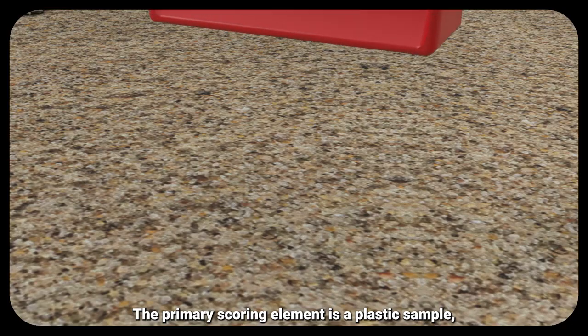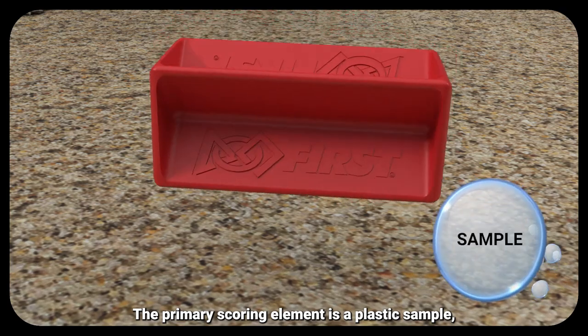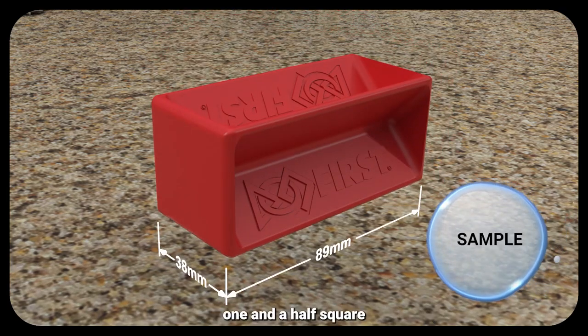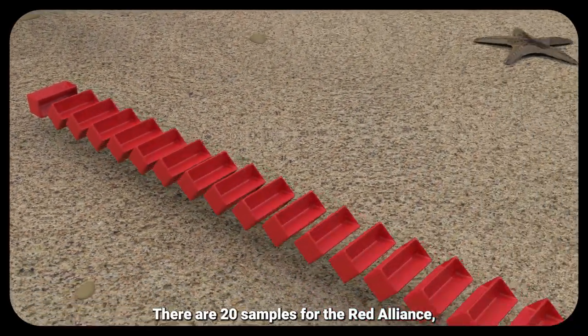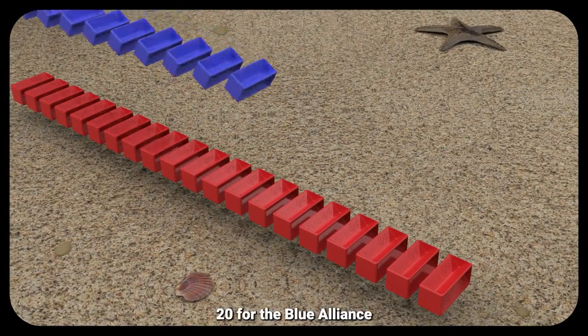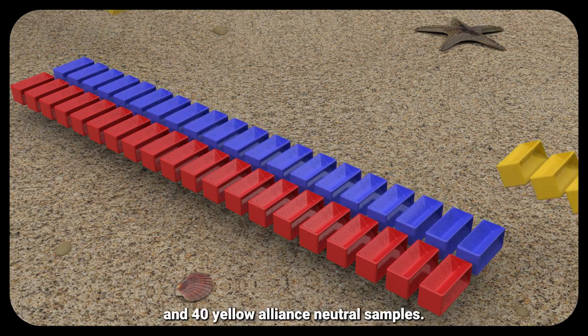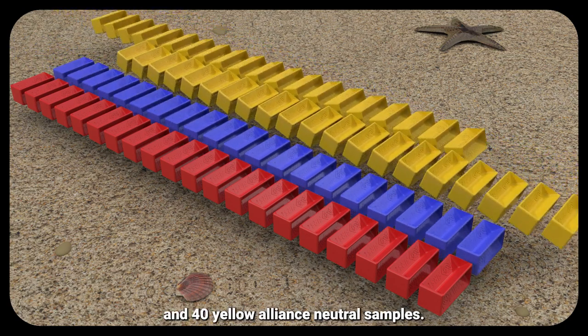The primary scoring element is a plastic sample, one and a half square by three and a half long. There are 20 samples for the red alliance, 20 for the blue alliance, and 40 yellow alliance-neutral samples.